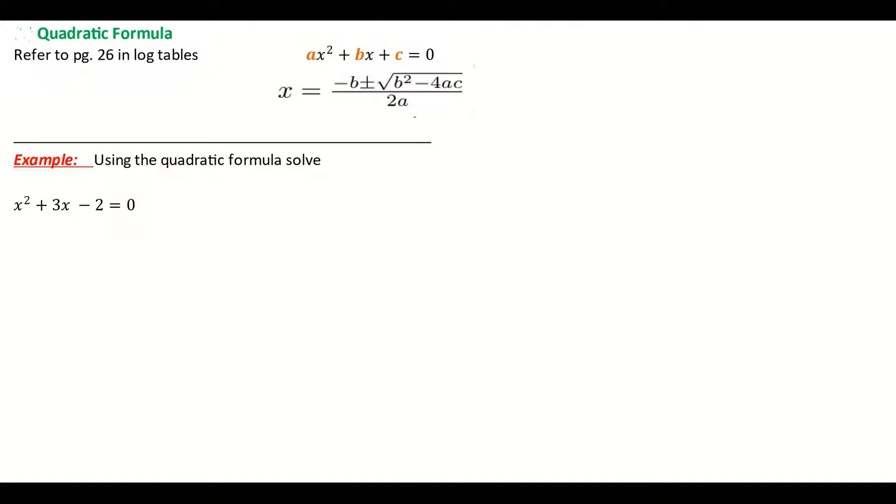The a, when I'm subbing into my formula, is the number that is in front of the x squared. The b is the number in front of the x, and the c is the number on its own, the constant. Just make sure that you have to also take the sign that's in front of the number. So we have to be careful whether it's plus or minus.